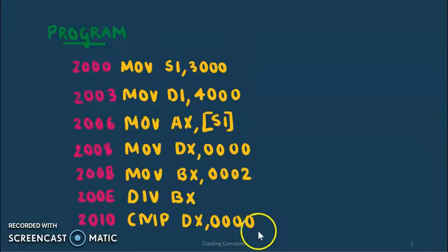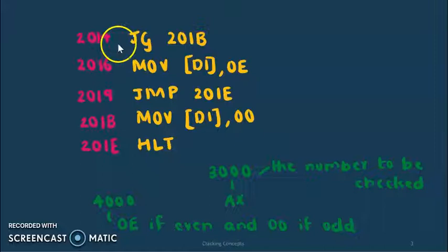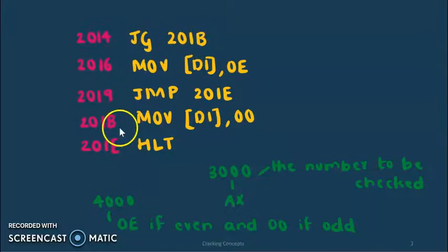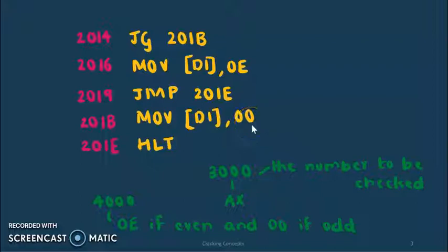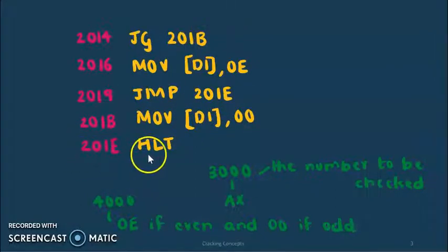If the value of DX is greater than 0, we'll perform a jump to the location 201B. This is a 4-byte instruction so the jump will be at location 2014. At 201B, it's clear that the number is odd, so we'll store the value 00 to the location pointed by DI. This is a 3-byte instruction so the next line of code is at 201E where we'll halt the program.